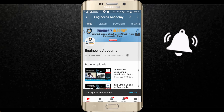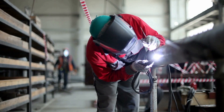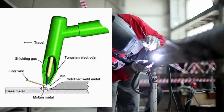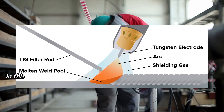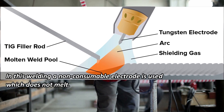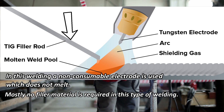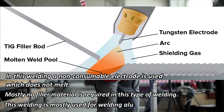In tungsten inert gas welding, the heat required to form a weld is provided by a very intense electric arc which is formed between the tungsten electrode and the workpiece. A non-consumable electrode is used which does not melt. Mostly no filler material is required, but if needed, a welding rod is fed into the weld zone directly and melted with the base metal. This welding is mostly used for welding aluminum alloy.